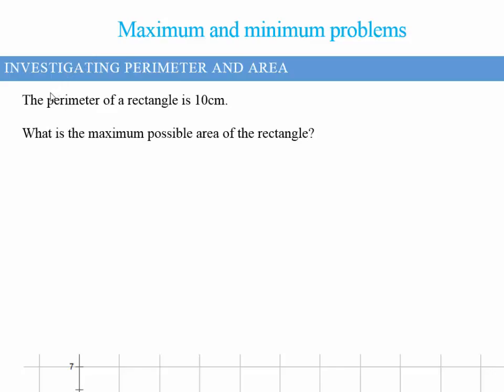The first thing I'd like you to do is think about a rectangle that has a perimeter of 10 centimeters. Pause the video and see if you can come up with at least five examples of what a rectangle might look like with a perimeter of 10 centimeters.